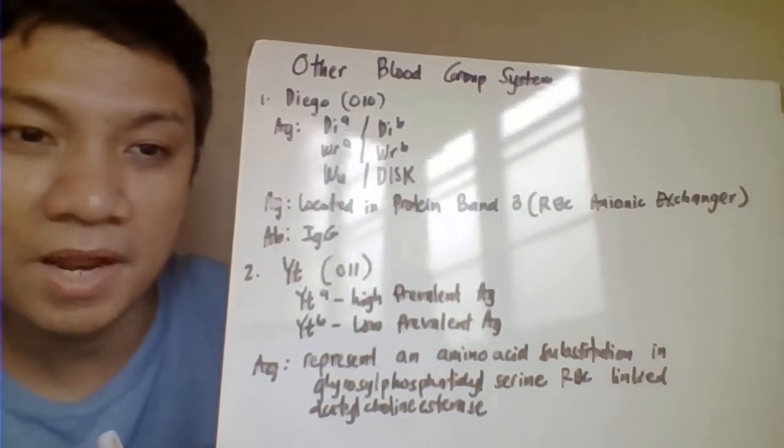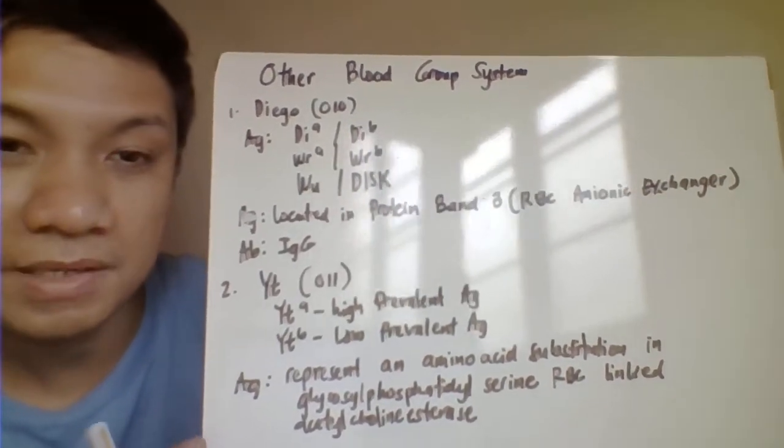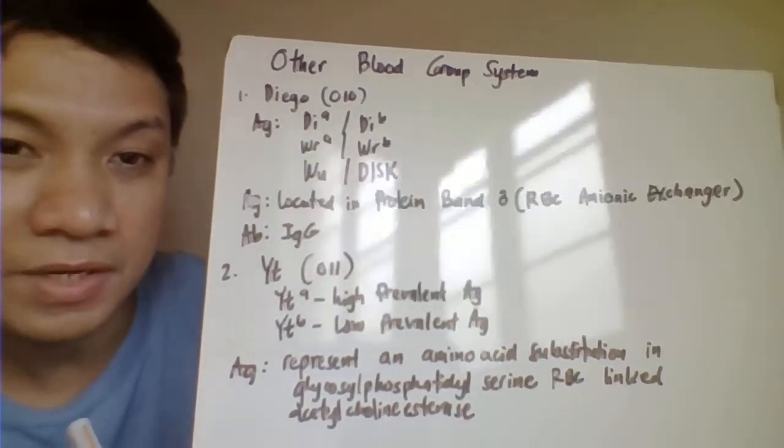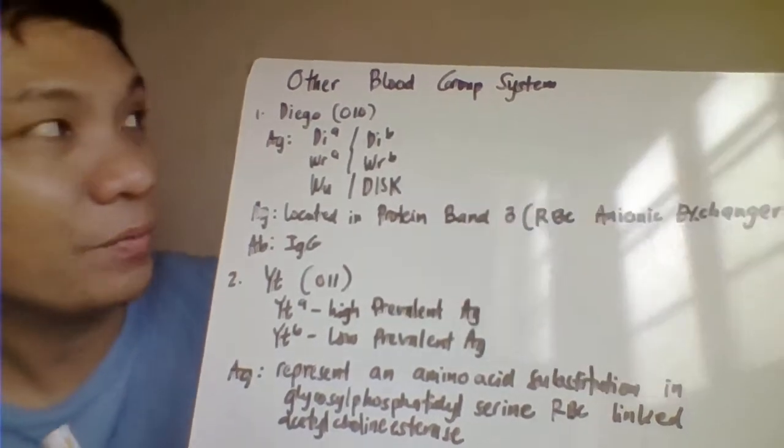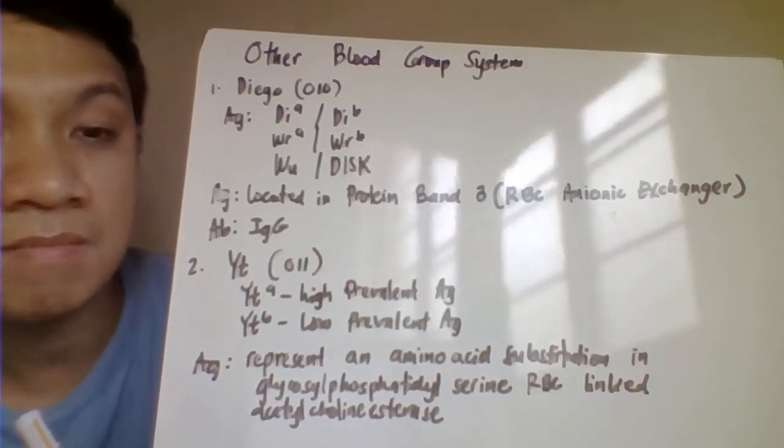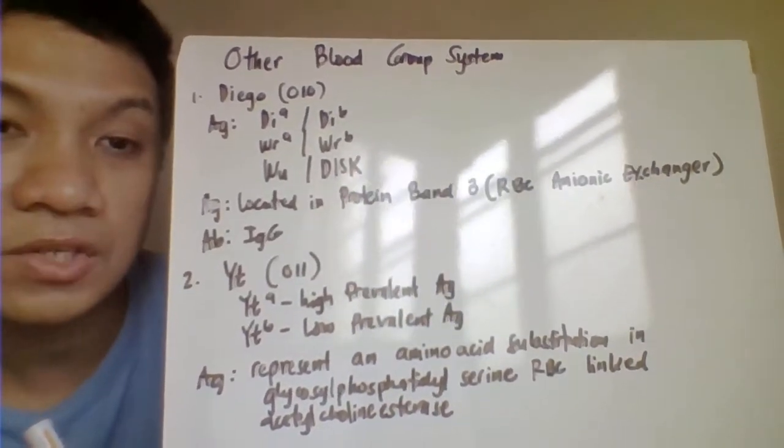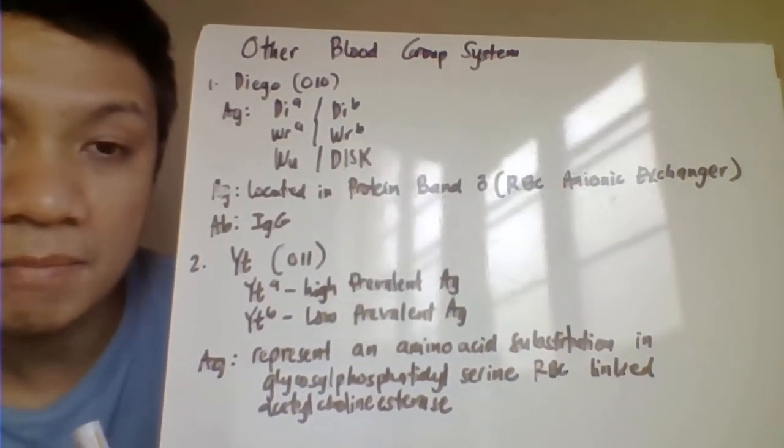Okay, so we have here some other blood group systems, although this one is considered to be a minor blood group system. So I just need to mention these to you. First we have here the Kidd blood group system. The Kidd blood group system is designated as 010 ISBT classification number.